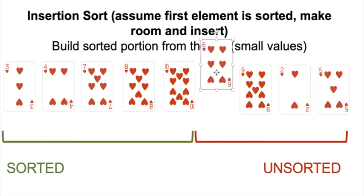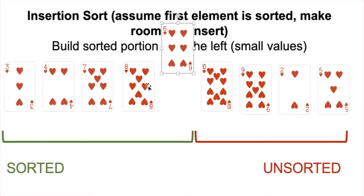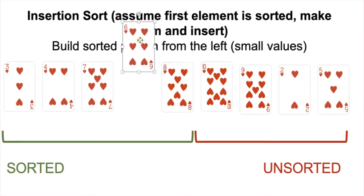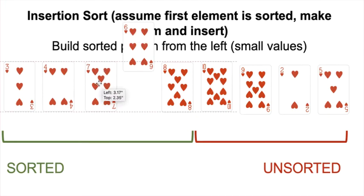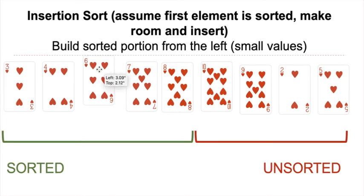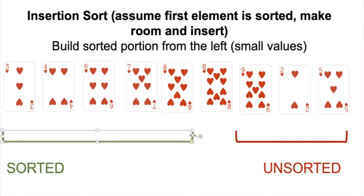Six is the first element in our unsorted portion. We ask: is six smaller than ten? Yes — slide the ten over. Is six smaller than eight? Yes — slide the eight over. Is six smaller than seven? Yes — slide the seven over. Is six smaller than four? No — so this is where we insert our six. We just shrunk our unsorted portion by one and grew our sorted portion by one.